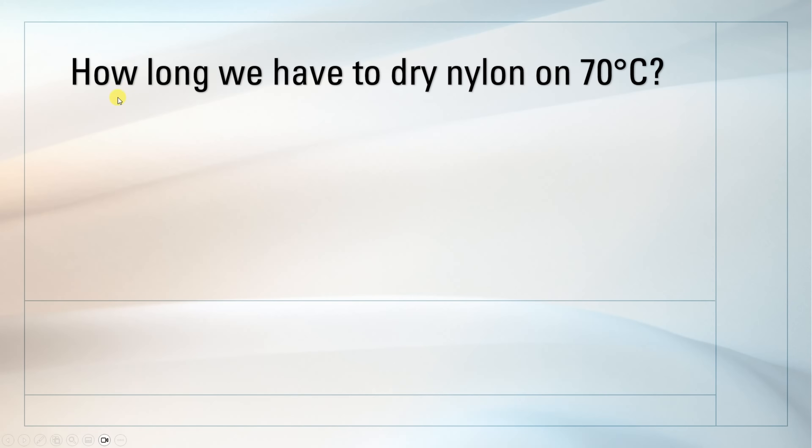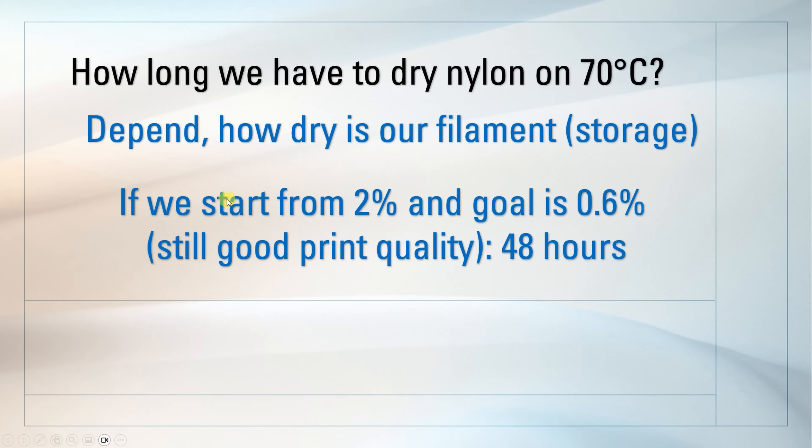OK, so some kind of summary. How long we have to dry the nylon on 70 degrees Celsius? Well, it depends on how dry is our filament, how we store it. So it is good if it is stored in some vacuum bag with some desiccant inside and similar. And if we start from, let's say, 2% and the goal is 0.6% as I mentioned, then using this equation, well, it is 48 hours. I know it sounds much, but yes, if we want to do this.